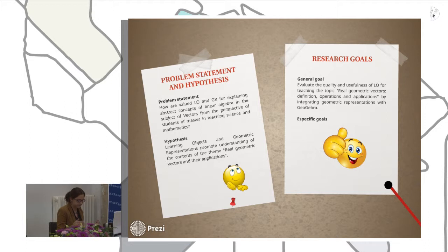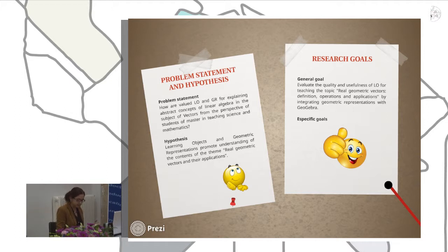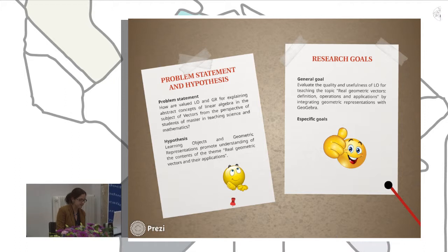The specific goals include: to show the importance of geometric representation for learning abstract math concepts; to construct geometric representations of vector operations; to design and develop learning objects covering real geometric vector definitions, operations, and applications; to design, develop, and validate an instrument for the assessment of a learning object; and to organize and analyze the data from the assessment of learning objects and geometric representations.